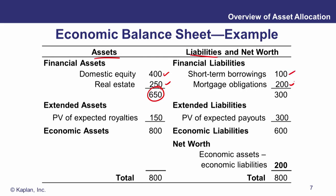Before we say that's the net worth, let's add those extended assets and liabilities. There's expected royalties from a licence, copyright, or trademark as extended income. And on the liabilities side, there are extended liabilities — perhaps pension payouts — totalling 300.